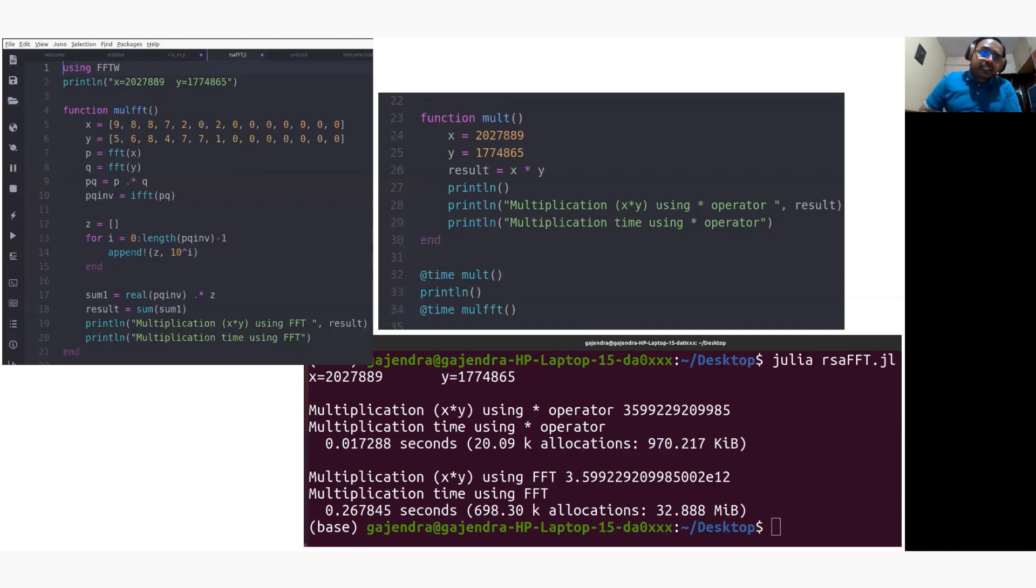In this slide, two multiplication operations are implemented. One is the normal multiplication operation using the star operator. The second one is a function called Mali-FFT which uses fast Fourier transform techniques to compute the product of two numbers. To compute the product, we have used FFTW.jl library in Julia. It supports FFT and IFFT functions. It also shows the time it takes to perform multiplication using star operator and FFT method.